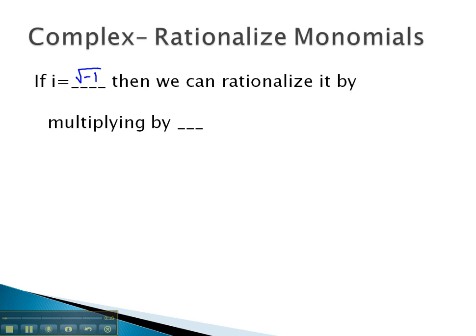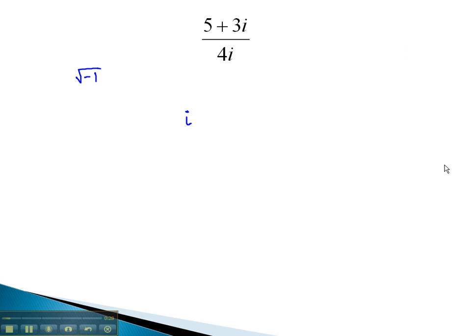If the expression is simply a monomial, we can simply multiply by i in order to rationalize the denominator. For example, if we had a problem such as this,